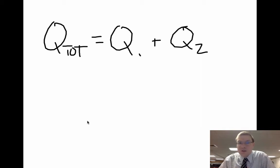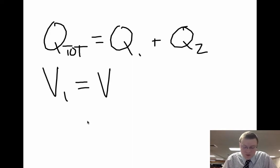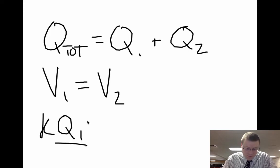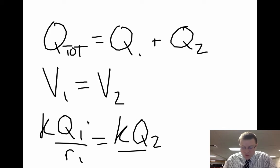And to solve for how the charges are going to redistribute themselves, we can look at the ratio of their voltages. Because it's not so much that each sphere is going to get the same charge, it's that each sphere is going to reach the same potential level. So I can say that voltage on sphere 1 must equal the voltage on sphere 2. Or KQ1 over R1 must equal KQ2 over R2.